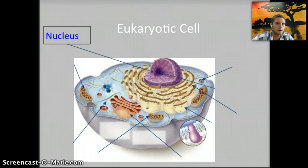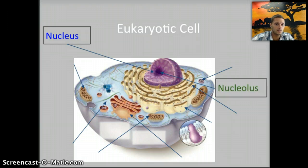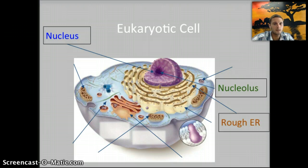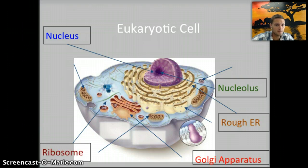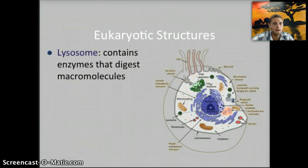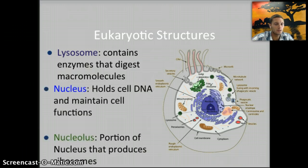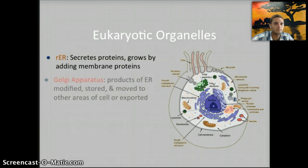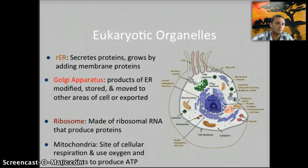Let's take a closer look at some of these different organelles. We have the nucleus, which is different than in the prokaryotic cell — this is where the DNA is actually kept. The nucleolus, the rough endoplasmic reticulum, and sometimes the smooth endoplasmic reticulum. The difference between the two is rough ER has ribosomes attached, while smooth ER does not. Also the Golgi apparatus, ribosomes, mitochondria — extremely important — and lysosomes. Go ahead and pause the video if you want time to write these down.